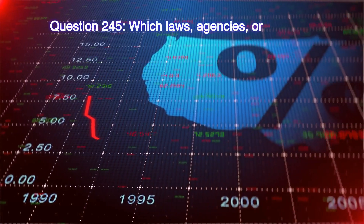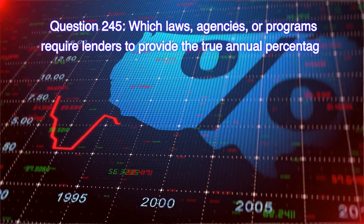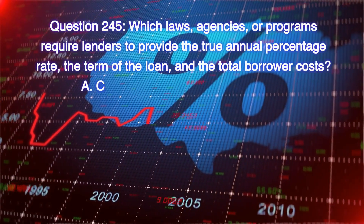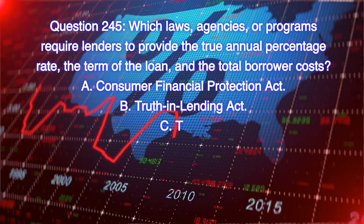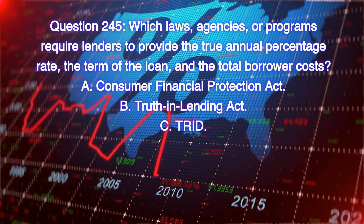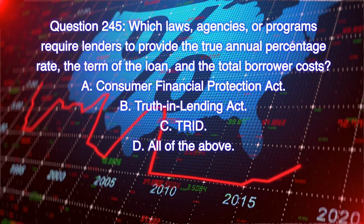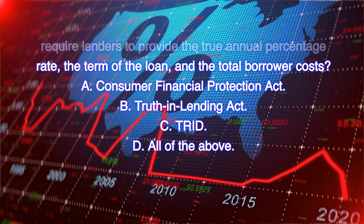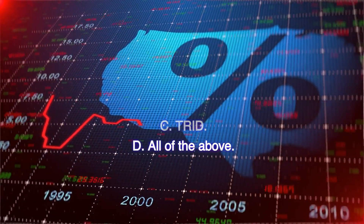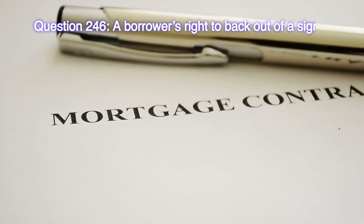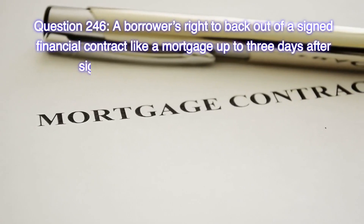Question 245: Which laws, agencies, or programs require lenders to provide the true annual percentage rate, the term of the loan, and the total borrower costs? A) Consumer Financial Protection Act, B) Truth in Lending Act, C) TRID, D) All of the above. Correct answer is D, all of the above.